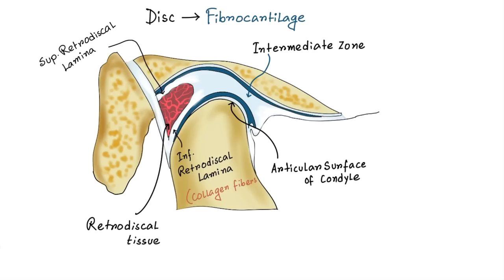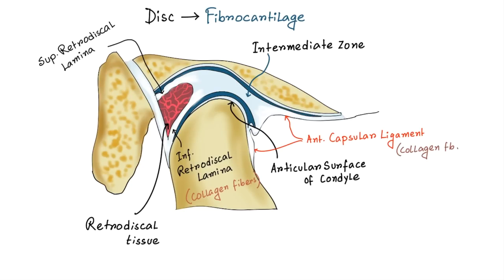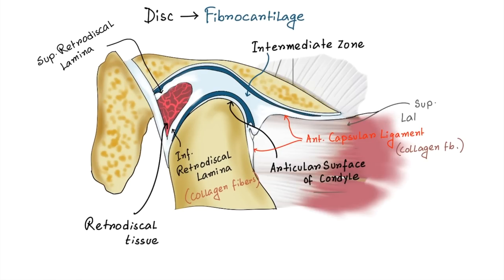The superior and inferior attachments of the anterior region of the disc are to the capsular ligament which surrounds most of the joint. The superior attachment is to the anterior margin of the articular surface of the temporal bone, and the inferior attachment is to the anterior margin of the articular surface of the condyle. Both these anterior attachments are composed of collagen fibers. Anteriorly, between the attachments of the capsular ligament, the disc is also attached by tendinous fibers to the superior lateral pterygoid muscle. The articular disc is attached to the capsular ligament anteriorly, posteriorly, medially, and laterally.